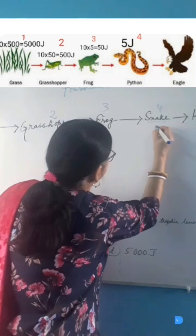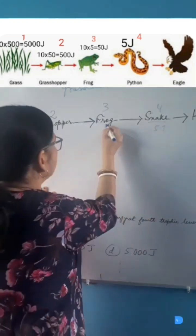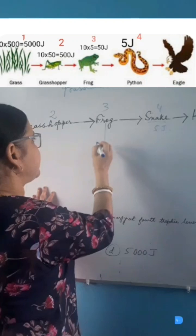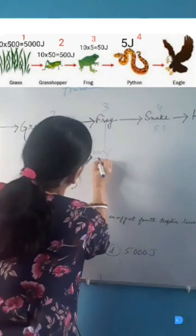At the 4th trophic level, there is 5 Joules of energy. So, the 3rd trophic level will have 10 times more energy than the 4th trophic level, 50 Joules.